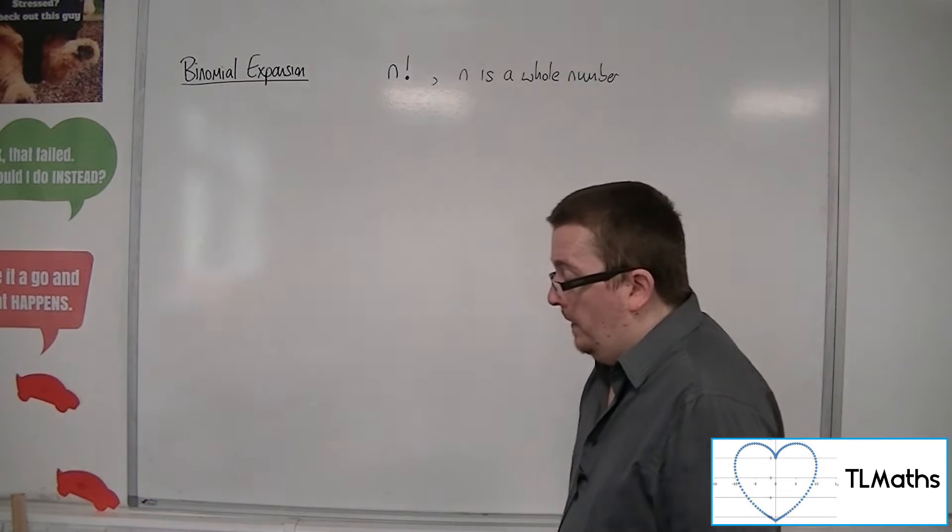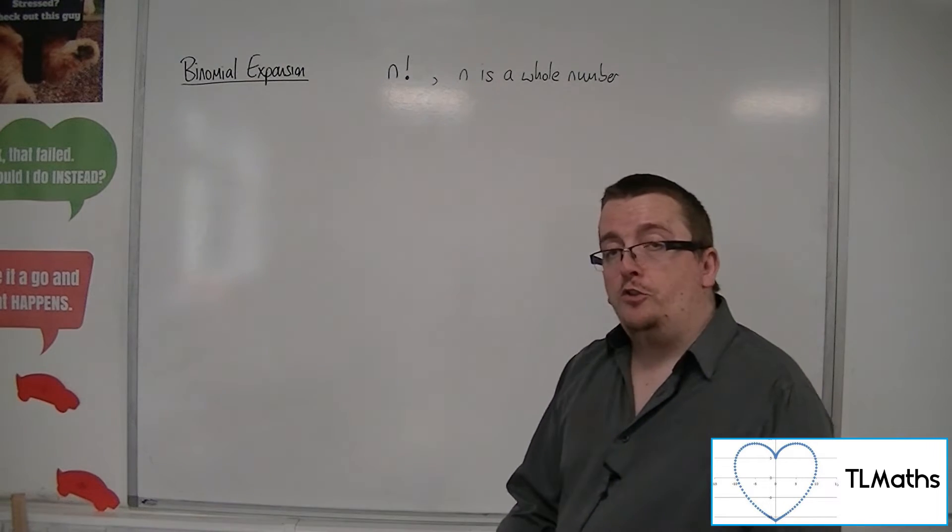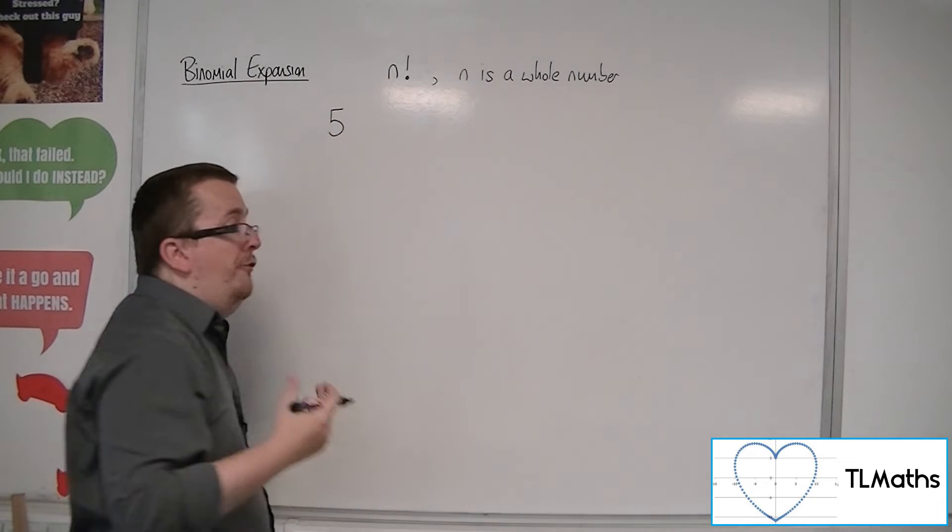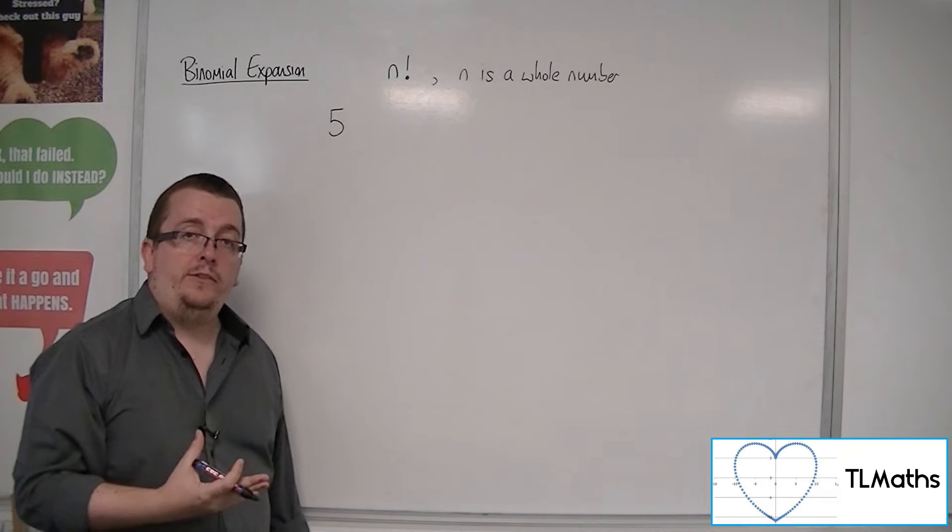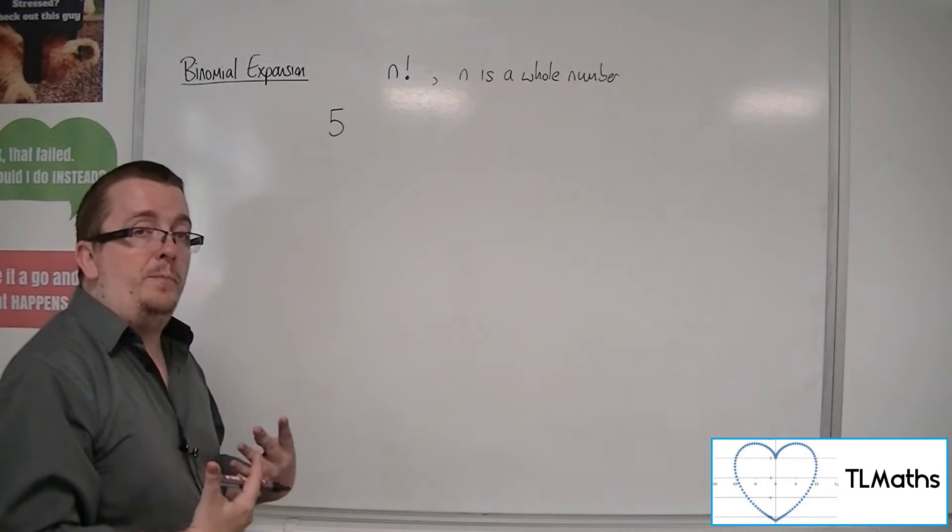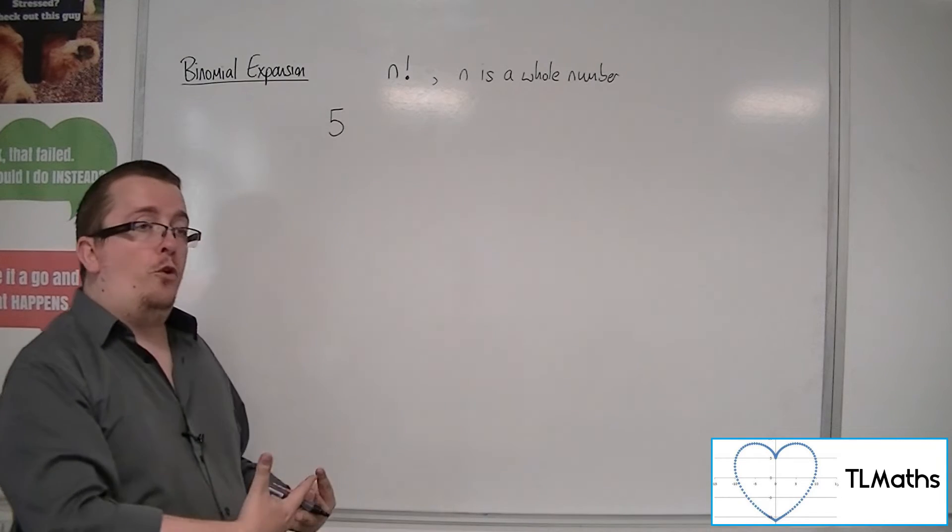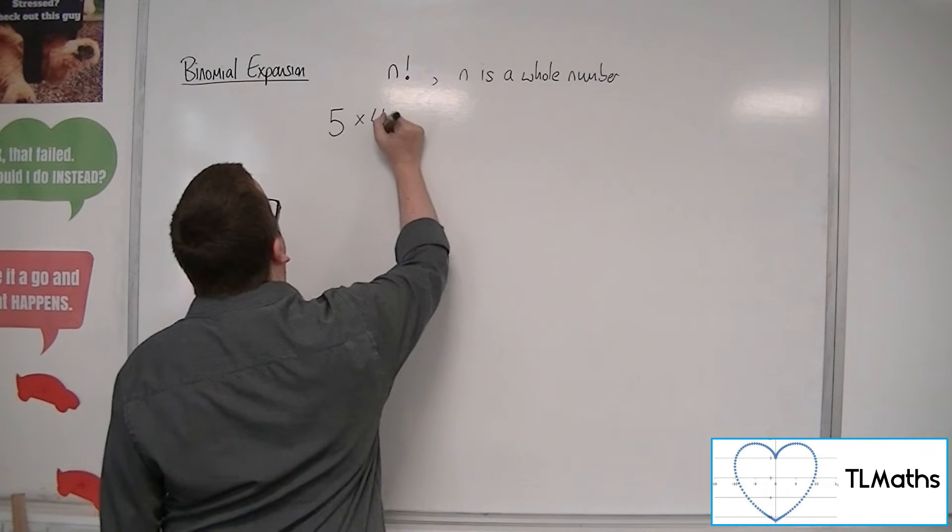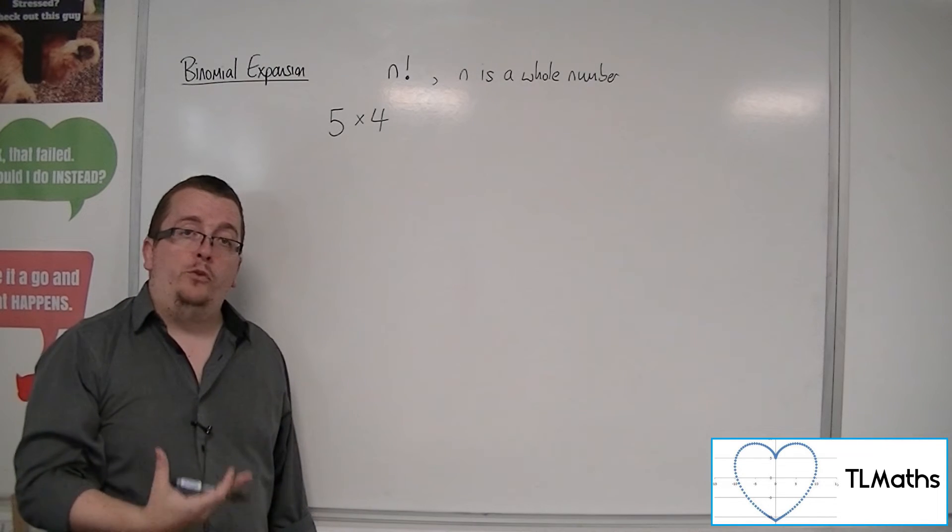First place could go to any of those five people. So there are five possibilities of first place. And once first place has been taken, there are four runners left who could potentially take second place. And so we would multiply five by four.